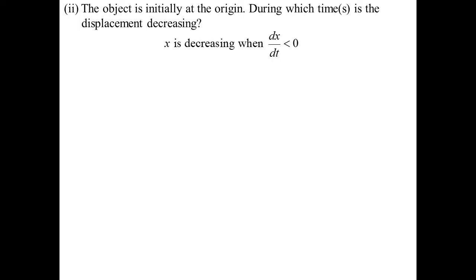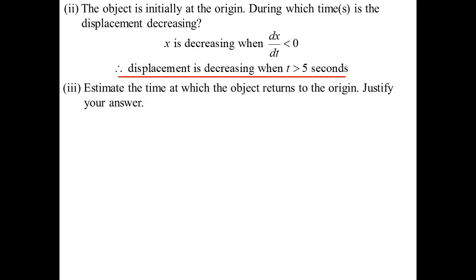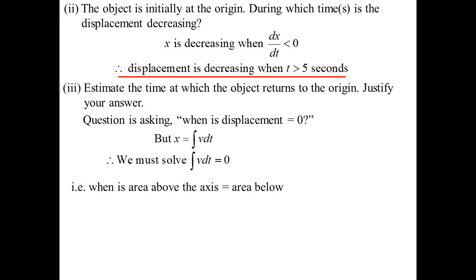The object is initially at the origin. Displacement decreases when velocity is less than zero — reading off the velocity-time graph, that's when t is greater than 5. To find when the object returns to the origin, displacement equals zero when the area above the axis equals the area below.